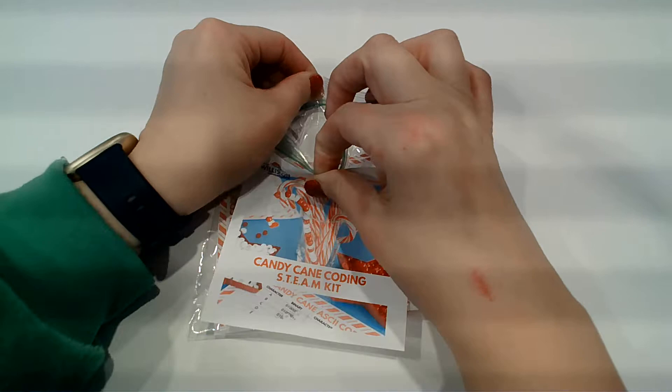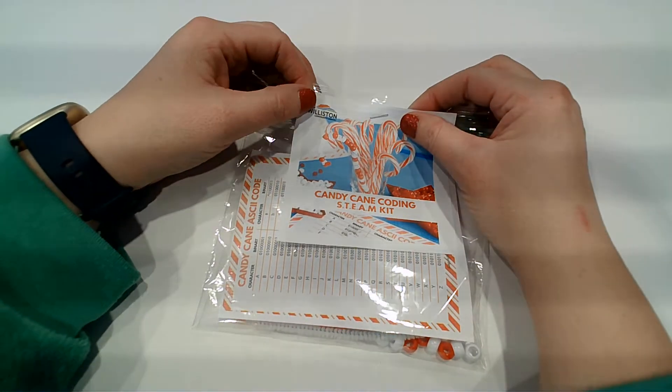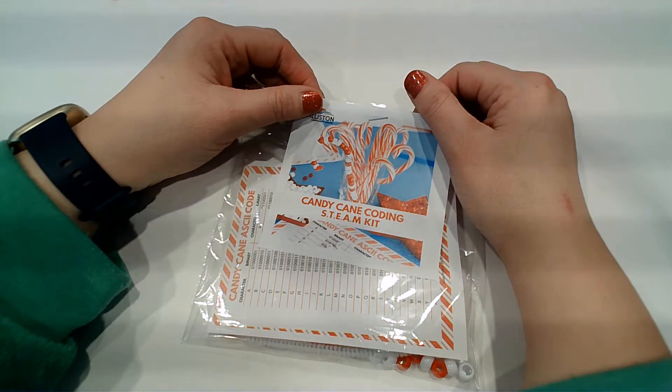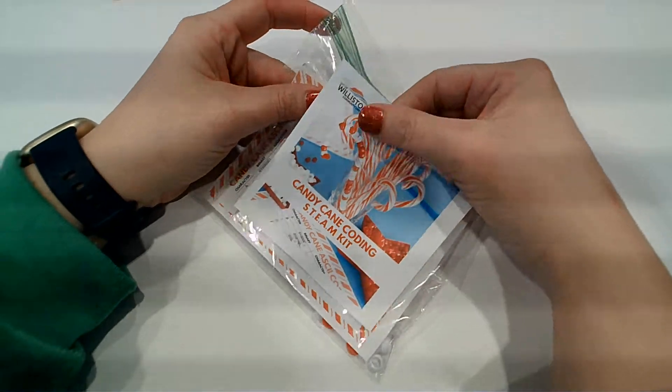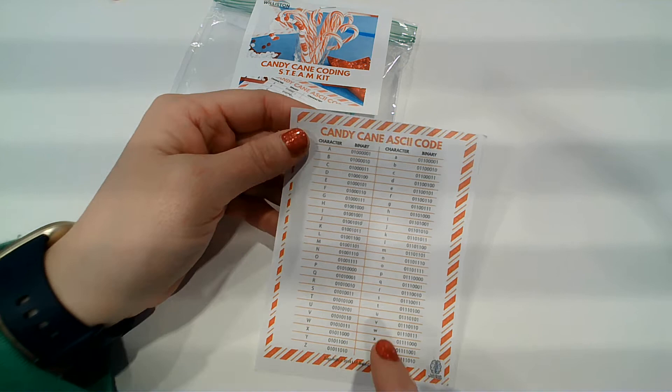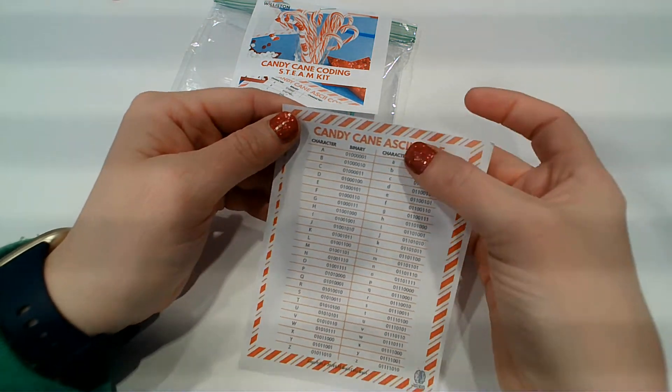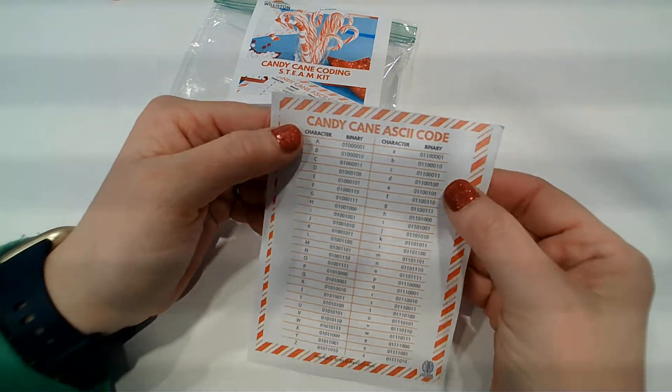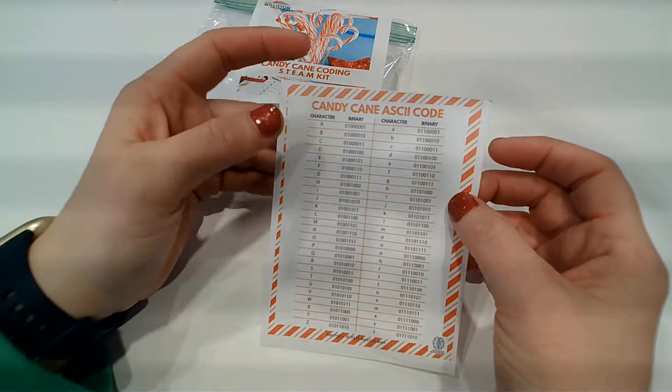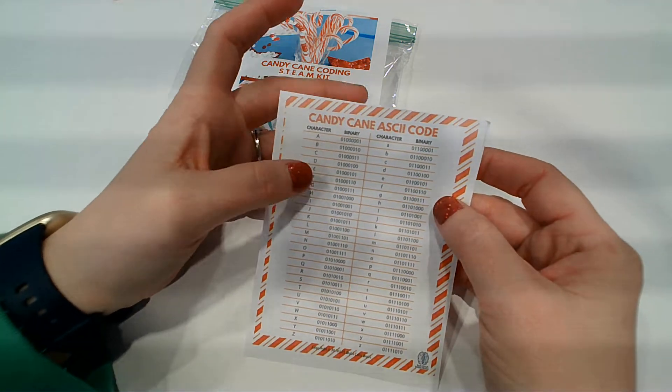So what we're doing today is we're going to be talking about binary coding, which for those of you who aren't sure what that means, and I am by no means an expert, but basically in the computer world, the language is built of zeros and ones. So the point of this activity is to just get kids familiar with coding and things like that and how everything works.